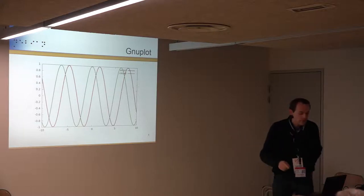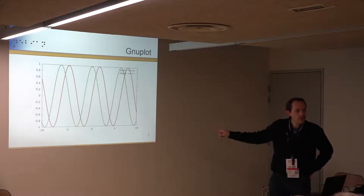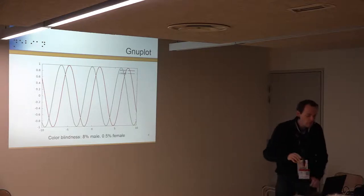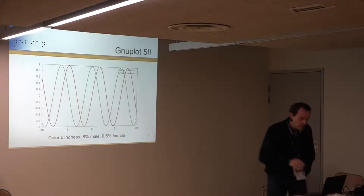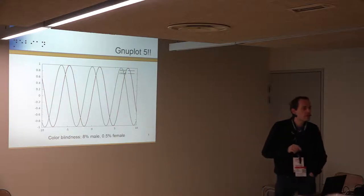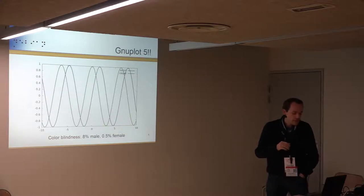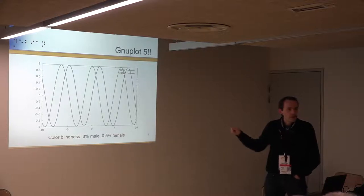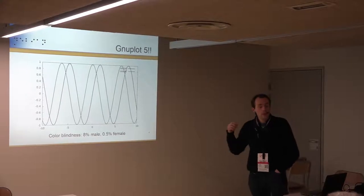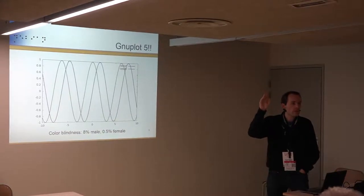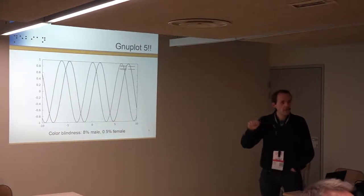For colorblind people, that default color scheme is a terrible choice because a lot of people cannot distinguish between green and red. Gnuplot 5 changed the colors, and there has been research about which colors are distinguishable by most people. About 8% of males are colorblind — raise your hand if you're colorblind. Nobody? That's strange given the statistics.